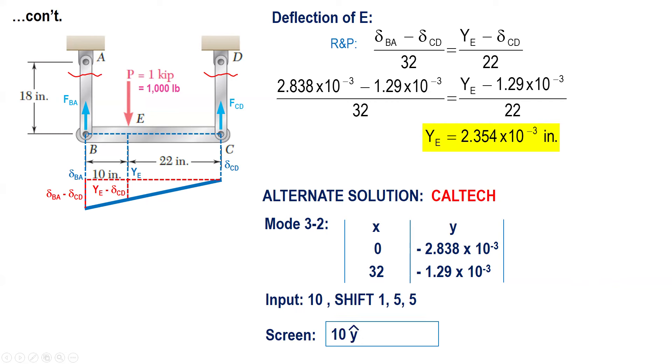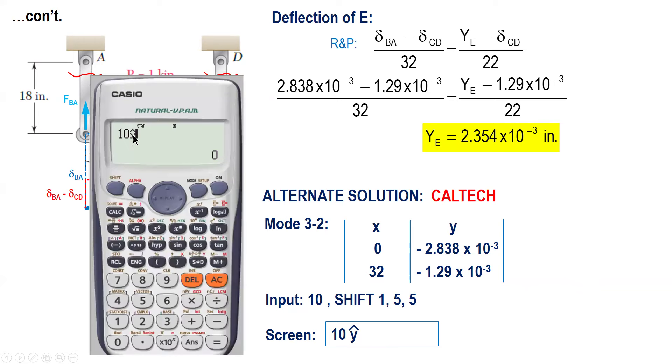So what appears on screen is this: 10 Y correct. After you press AC, you press 10 then shift 1.